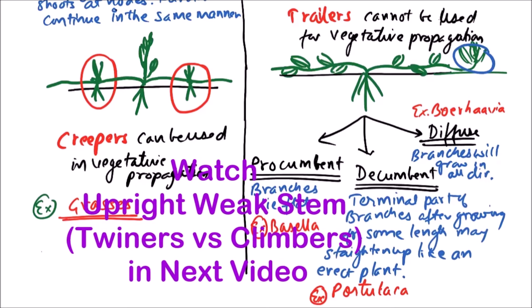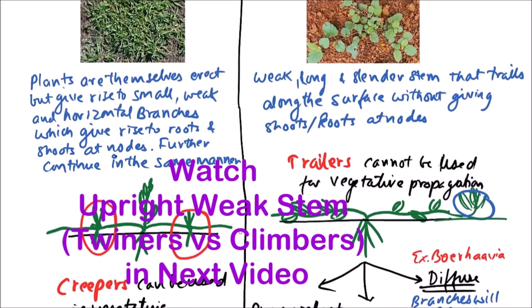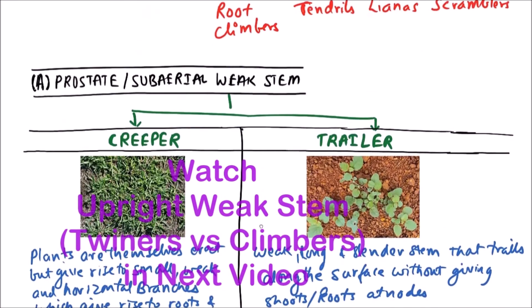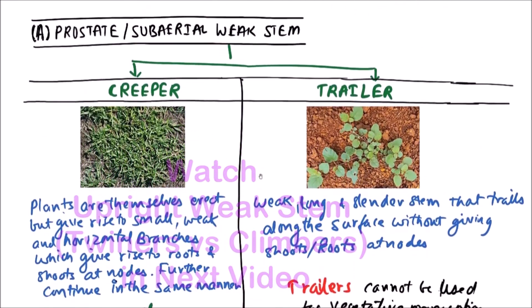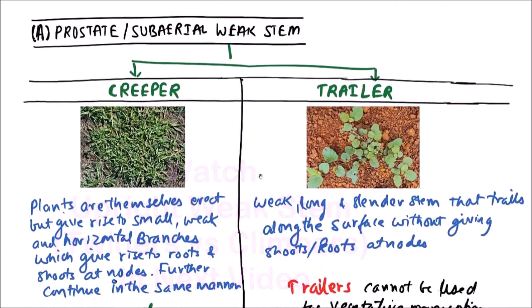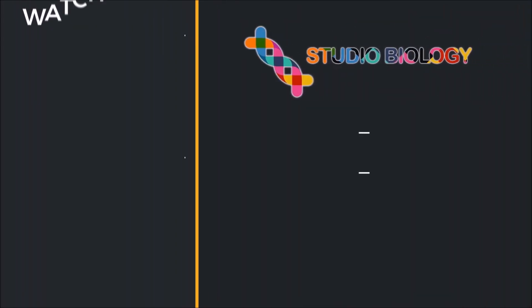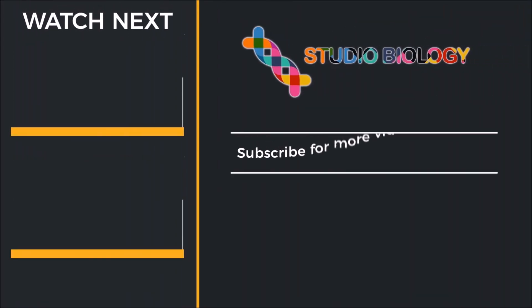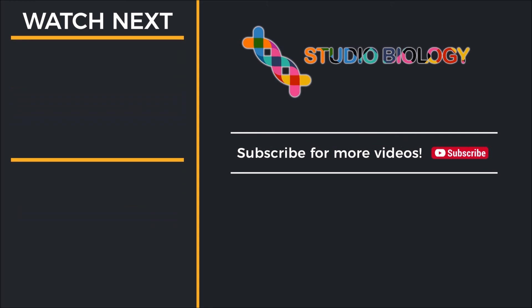So these are the two major types of prostrate or subaerial weak stem, that is creepers and trailers. In the next video, we'll discuss the upright weak stem. We'll see you next time. Bye.